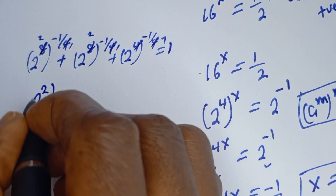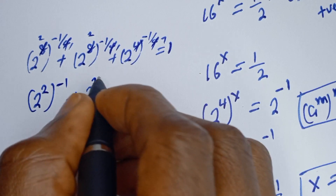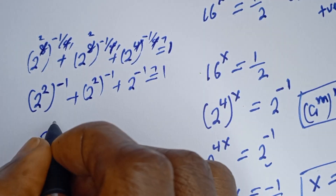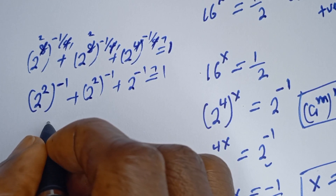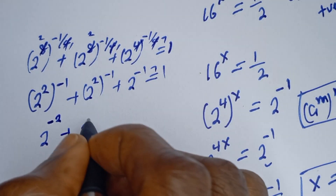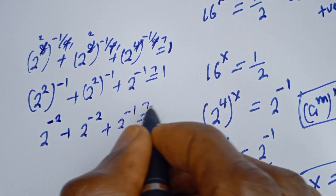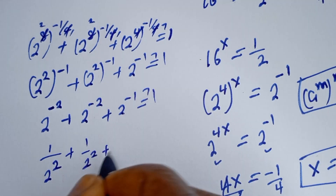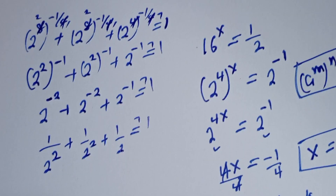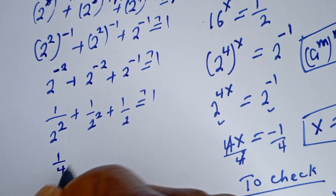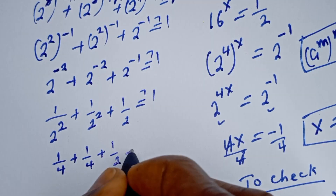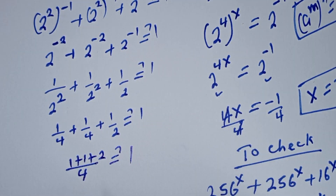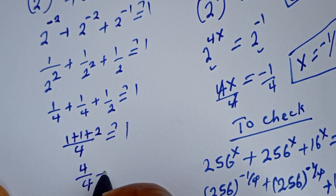We have 2 squared to the power of minus 1 plus 2 squared to the power of minus 1 plus 2 to the power of minus 1 must equal 1. This is 2 to the power of minus 2 plus 2 to the power of minus 2 plus 2 to the power of minus 1 must equal 1. Written as fractions: 1 over 4 plus 1 over 4 plus 1 over 2 must equal 1. This gives 1 plus 1 plus 2 over 4, which is 4 over 4, must equal 1.